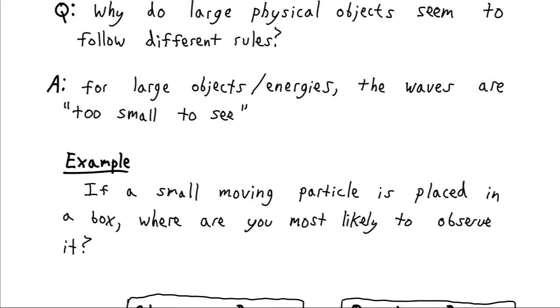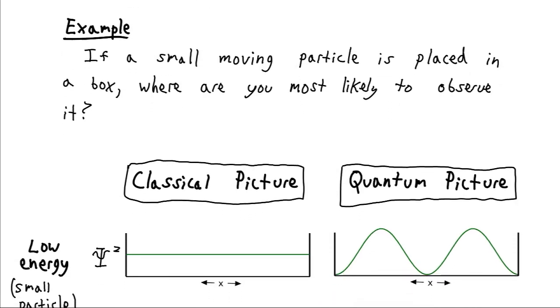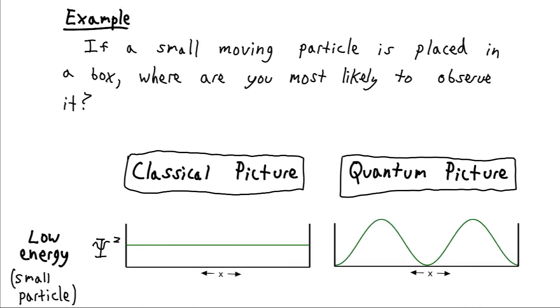So say for example we have a small moving particle placed in a box. We want to know, you know, where are we most likely to observe it if we peak inside of our box at some random point. Well according to the classical picture, we have an equal probability of finding that particle at any point in the box. If it's moving back and forth, then we check in at some random time.